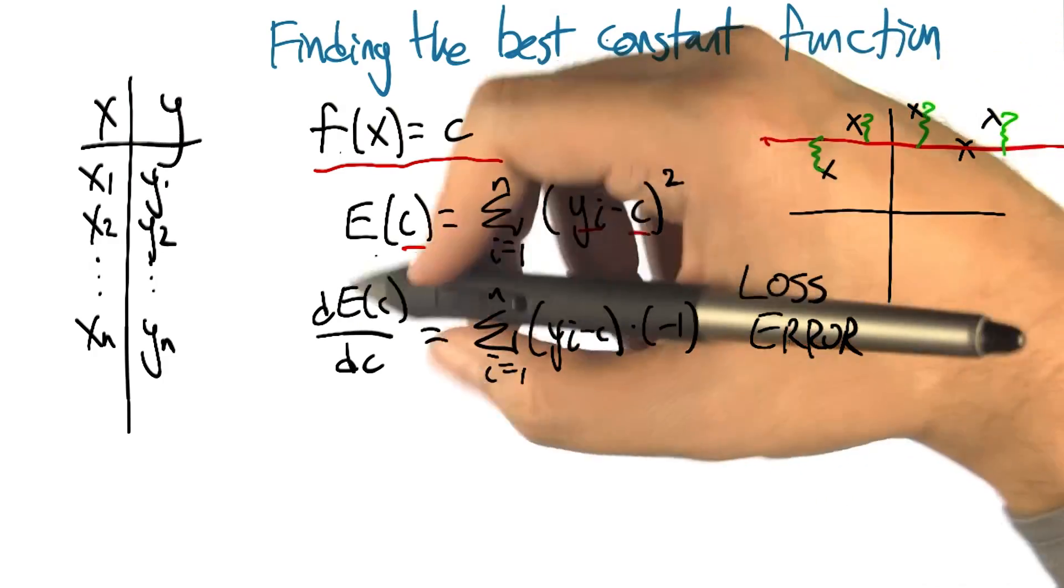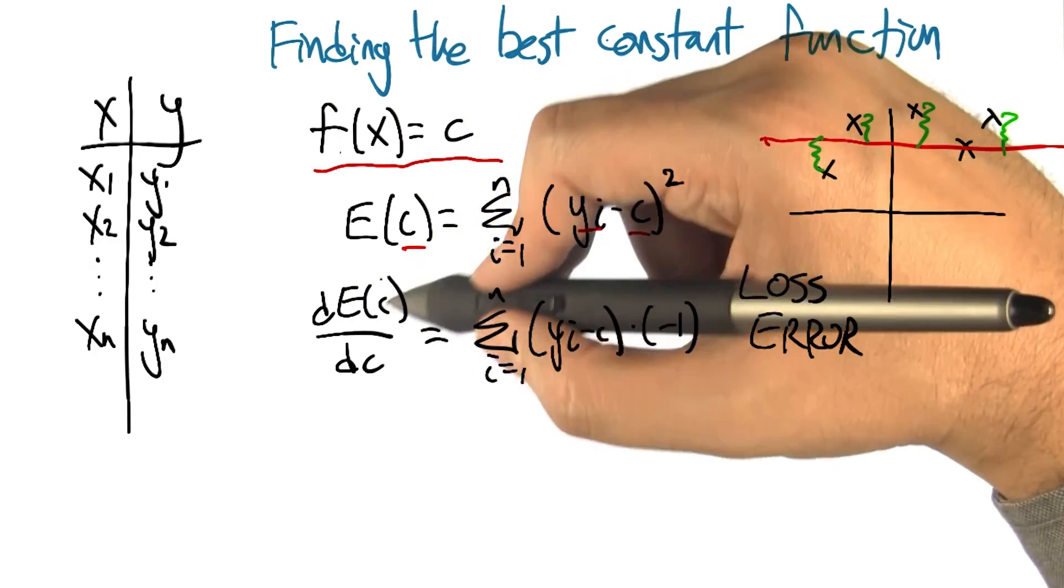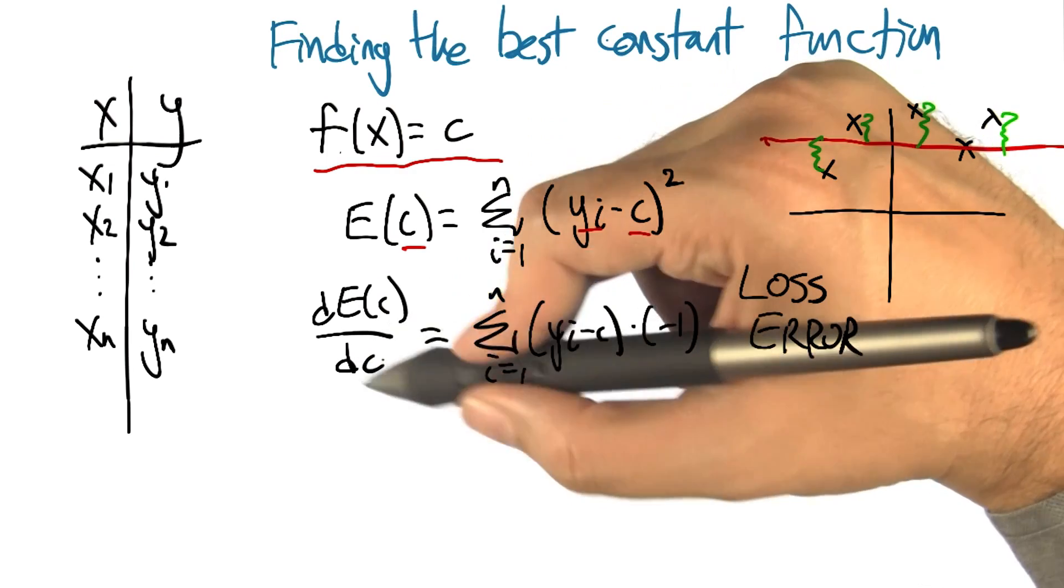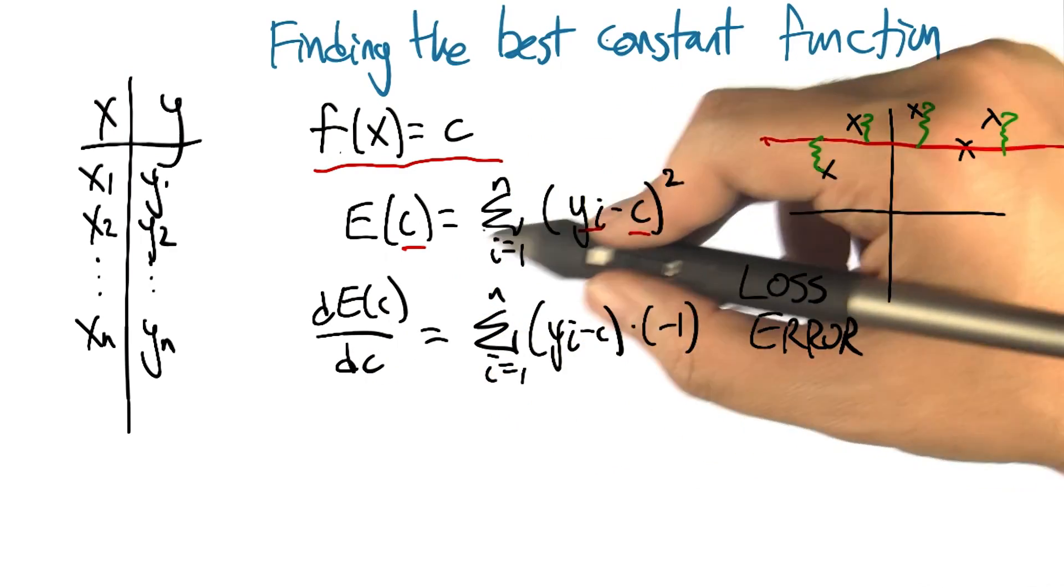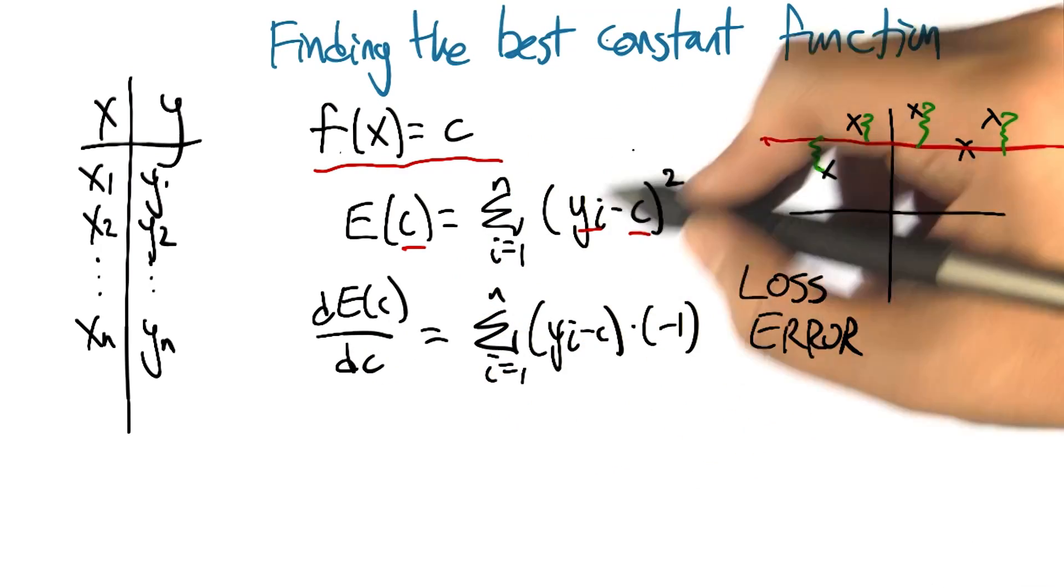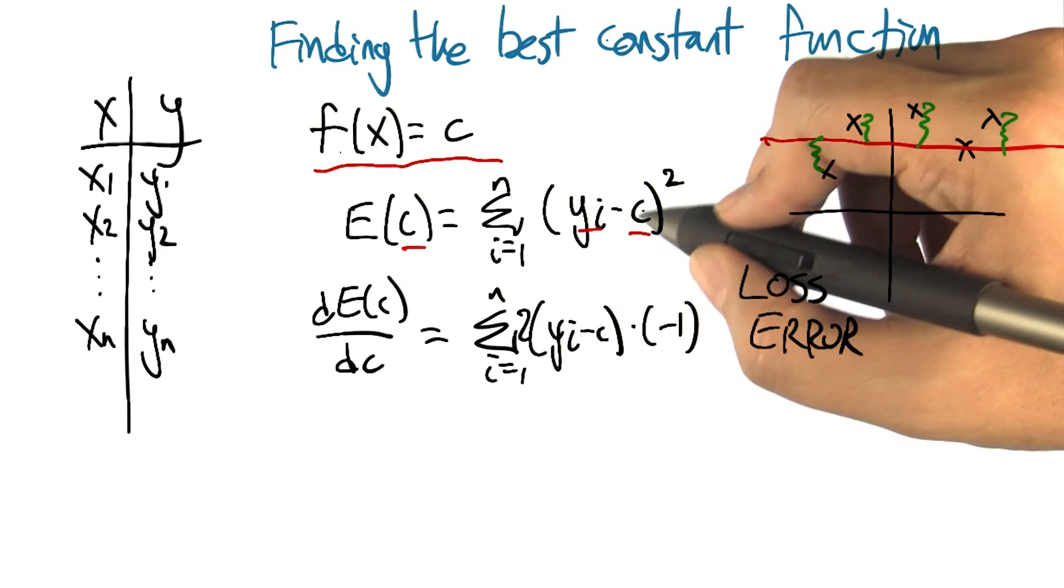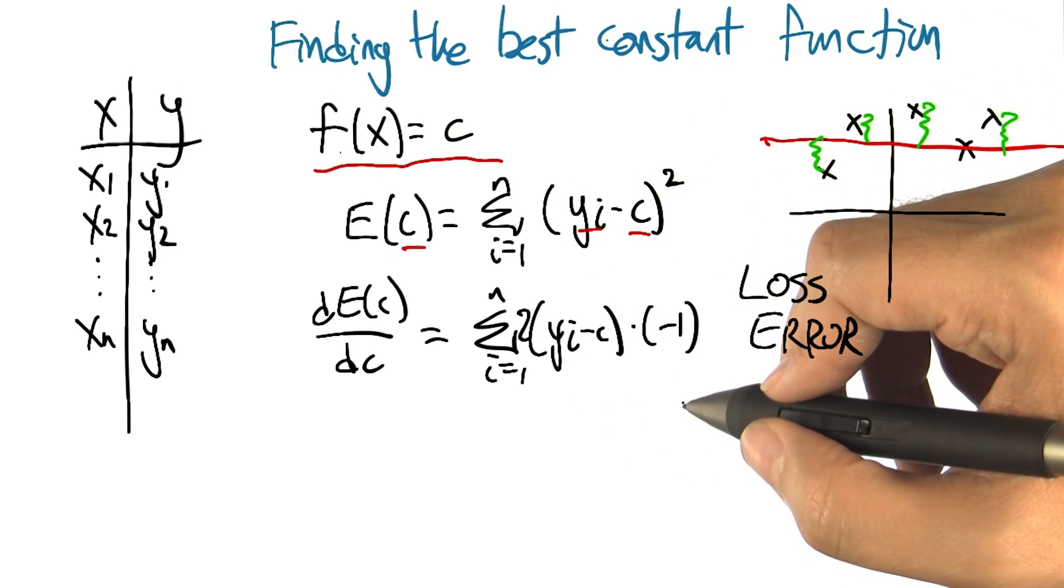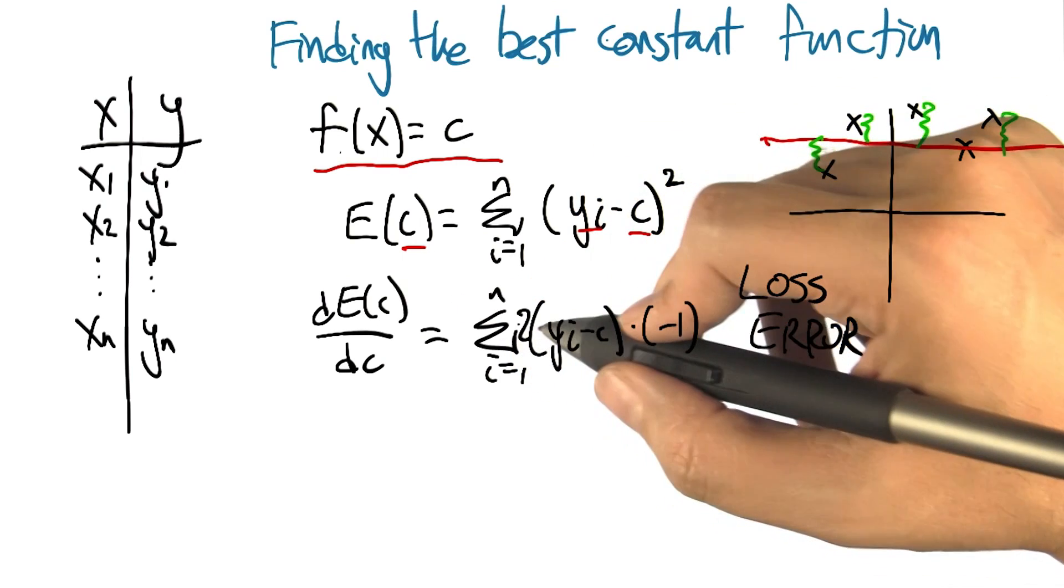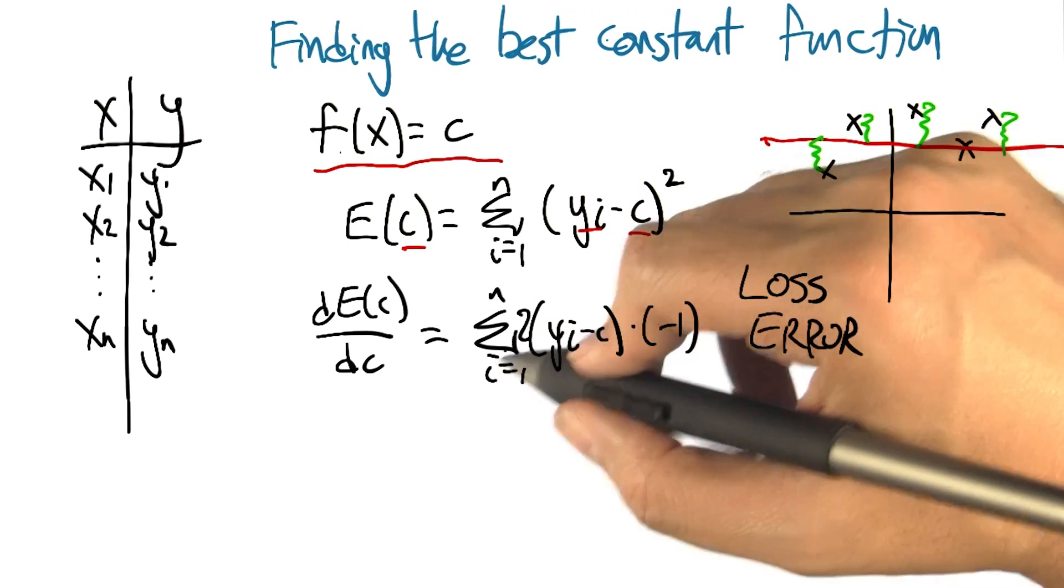Okay, so just now using the chain rule, if we want to find how does this error function output change as a function of the input c, we can take the derivative of this sum, bring the 2 over times this, times the derivative of the inside, which is negative 1 in this case. And now this gives us a nice smooth function saying what the change in the error is as a function of c.